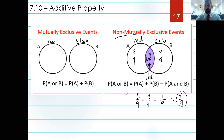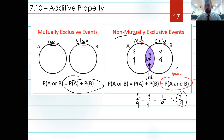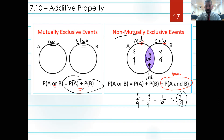To decide whether to subtract or not, ask yourself: is it possible for something to be both of those things? Is it possible for something to be both red and black? No — just add them. Is it possible for something to be both red and a circle? Yes — subtract the overlap. If there were two red circles, subtract both. That's the difference between mutually exclusive and non-mutually exclusive events. When using the word 'or,' consider mutual exclusivity and whether you need to subtract.